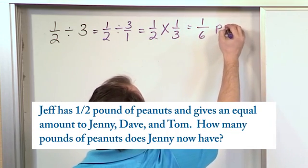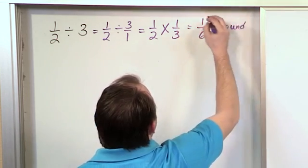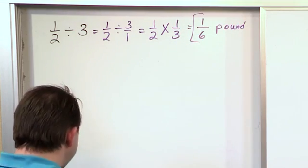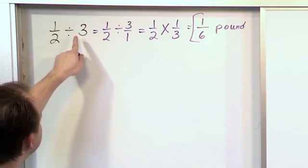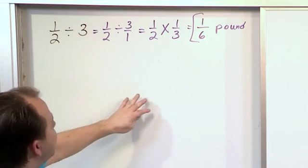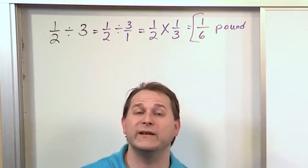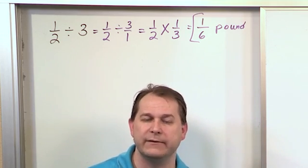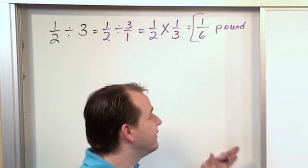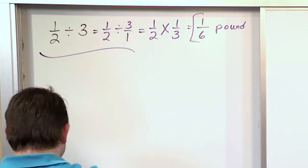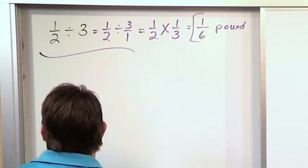So how much? One sixth of a pound. So that means that if Jeff has half pound of peanuts and he gives an equal amount to three different people, then Jenny, which is one of those people, is going to get one sixth of a pound. That's how much she's going to have. So it's a very useful skill to be able to divide fractions because this is a very practical kind of problem. You might be dividing up candy or anything else.